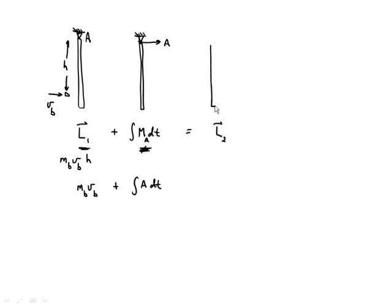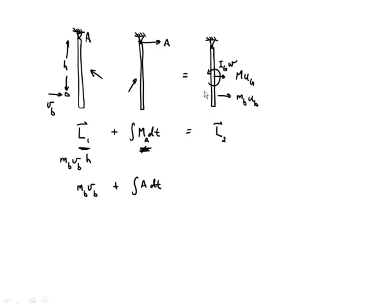The final angular momentum is a combination of the bullet and plate. I have the mass of the bullet times its velocity after impact, the mass of the plate M times the velocity of the center of gravity of the plate, and also a rotational term. Even though the rotation is about point A, the angular momentum includes the moment of inertia about the center of gravity times omega for the plate. Evaluating this gives the mass of the bullet times velocity times H, which is counter-clockwise about point A — so k-hat — plus zero because there's no moment at A.